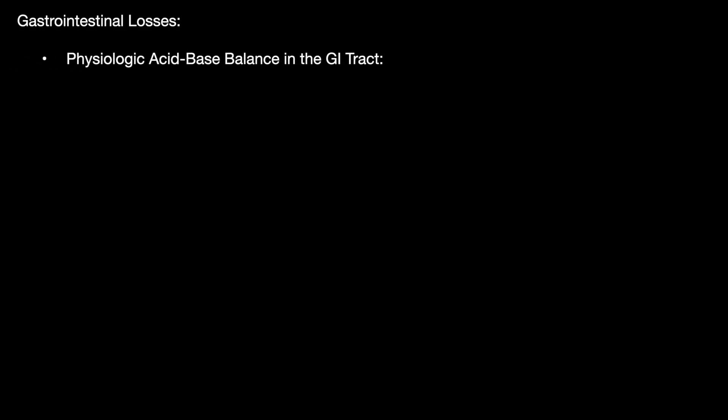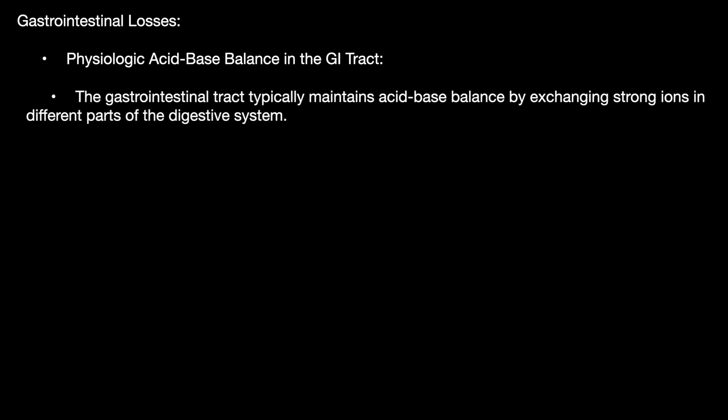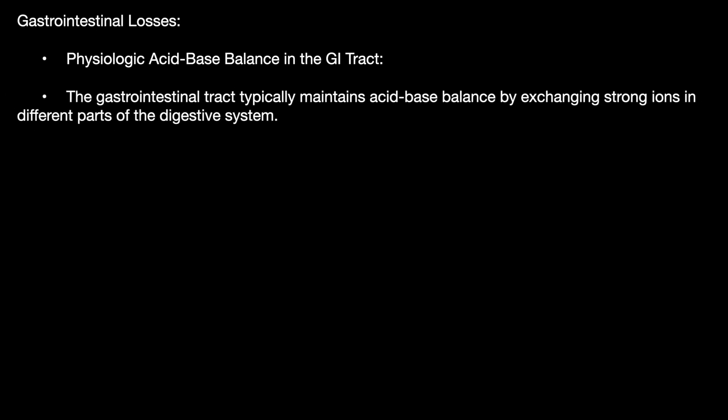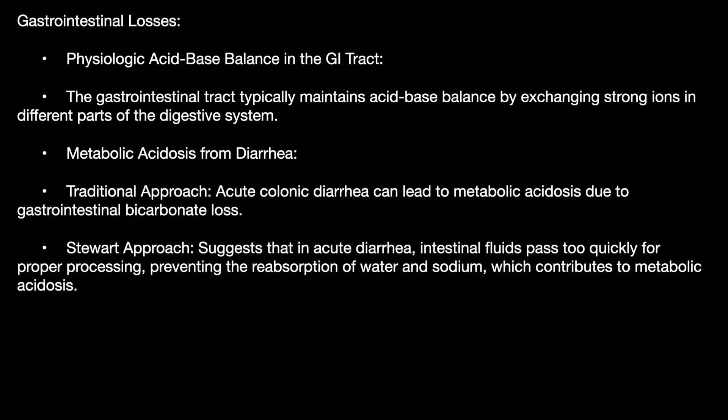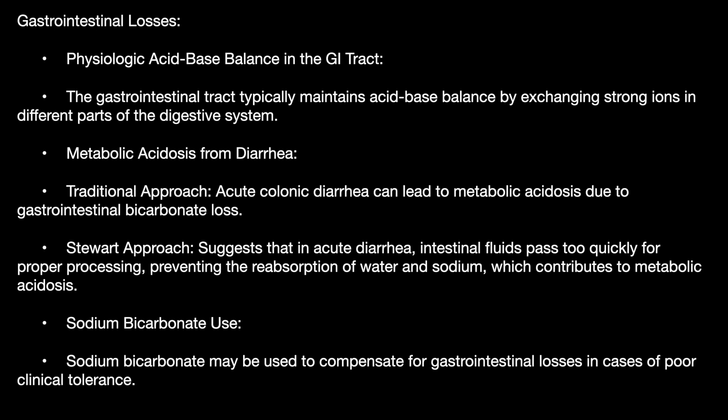Regarding gastric losses: the GI tract typically maintains acid-base balance by exchanging strong ions into different parts of the digestive tract. Traditionally, acute colonic diarrhea can lead to metabolic acidosis due to GI bicarbonate loss. The Stewart approach explains that in acute diarrhea, intestinal fluid passes too quickly for proper processing, preventing sodium reabsorption, contributing to metabolic acidosis. Therefore, sodium bicarbonate infusion can be used to compensate for this sodium loss in the GI tract, rather than to provide bicarbonate per se.